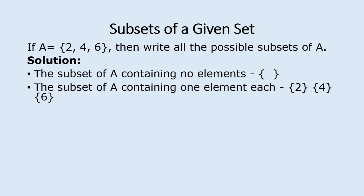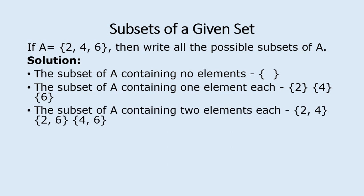We can also have subsets containing any combination of two of the elements. These would be the set containing 2 and 4, the set containing 2 and 6, and the set containing 4 and 6. Note that the set containing 4 and 2 is the same as the set containing 2 and 4 — we look at all possible combinations of any two elements.